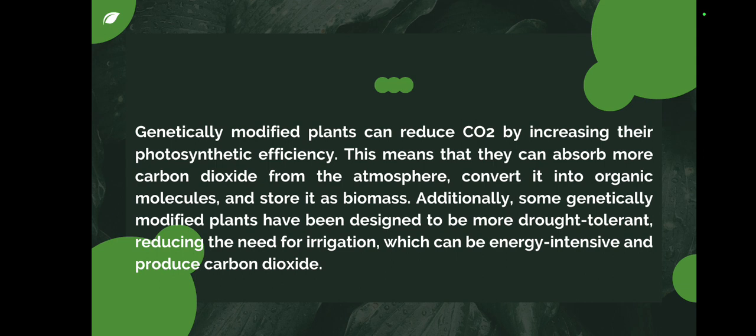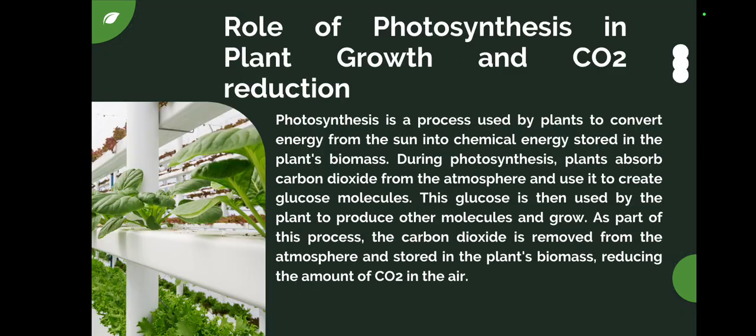Additionally, some genetically modified plants have been designed to be more drought tolerant, reducing the need for irrigation, which can be energy intensive and produce more carbon dioxide. By increasing photosynthesis capacity, we can reduce CO2 concentration in our environment. We modify the plants and crops so that they can absorb more CO2 from the environment, making it very environment friendly.